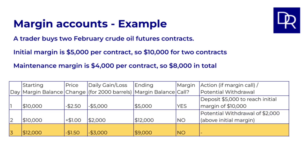On day three, the starting margin balance is $12,000. Let's say the price decreases by $1.50 per barrel — that's a loss of $3,000. The ending margin balance becomes $9,000. Margin call: no. The balance is below the initial margin but above the maintenance margin. No action is required and the account continues to operate normally.